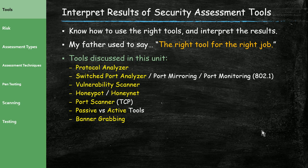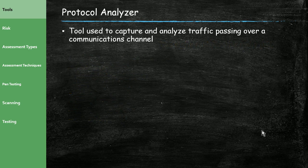All these techniques, except honeypots and honeynets, are used by attackers. We're going to use those same tools to probe ourselves and see where we're vulnerable — kind of like putting a lock on the front door and then trying the same techniques a thief would use to bypass it, like trying a bump key. Let's start with the protocol analyzer.